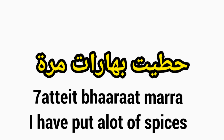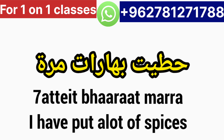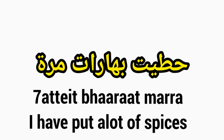Our next sentence is: Hattait baharat marra, or Hattait baharat kithir. Kithir or marra means 'a lot', 'so much', or 'very much' — not 'once', even though marra can mean 'once'. Here it means 'very much'. Hattait means 'I have put' in the past. Baharat means 'spices'. So the full meaning is: Hattait baharat marra — I have put a lot of spices.